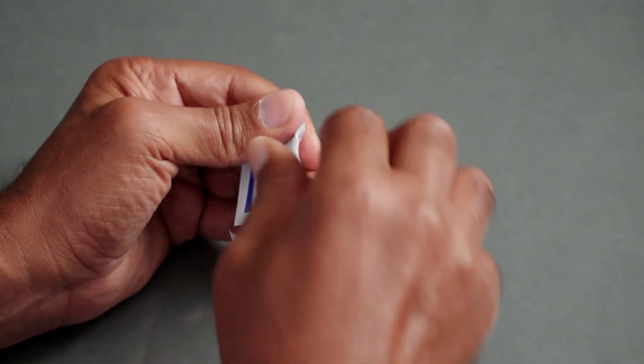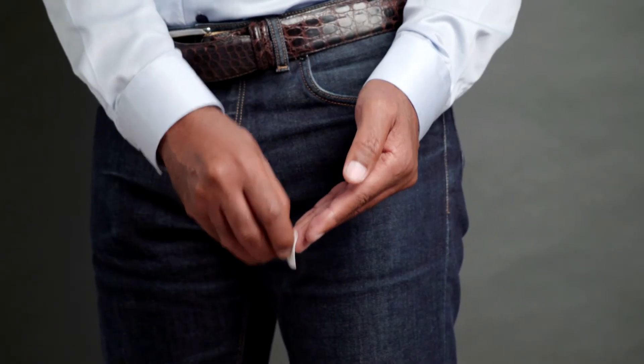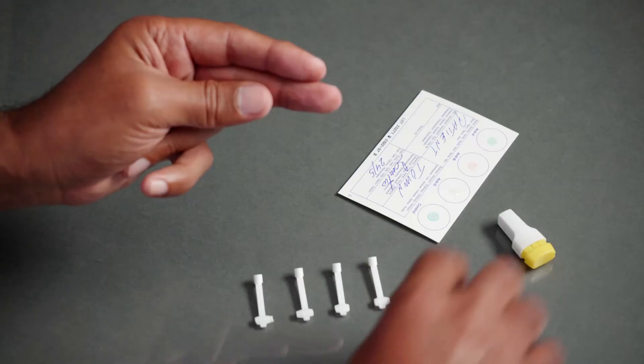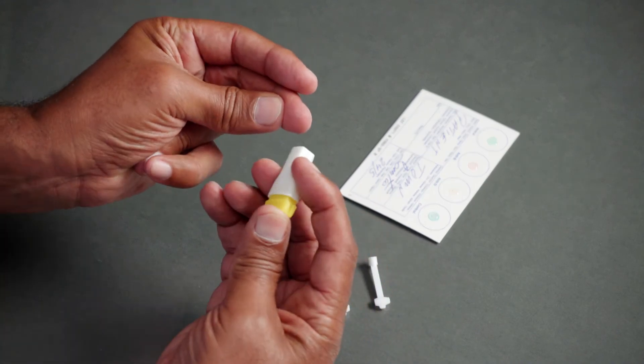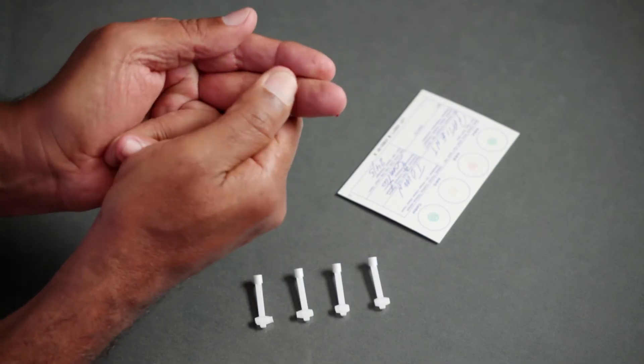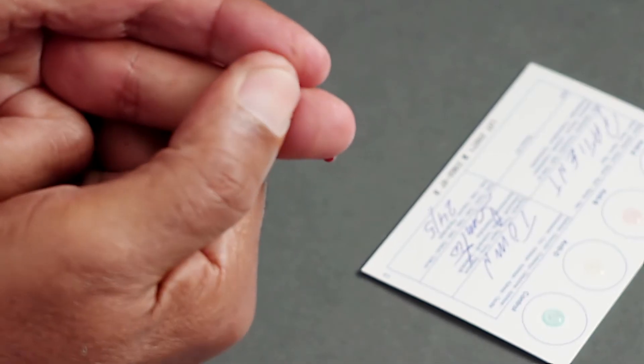Clean your finger with a sterile swab. Swing your arm to increase the blood flow to your fingers. Stretch and puncture the soft skin at the side of your fingertip. Massage your finger towards your fingertip to increase blood flow.